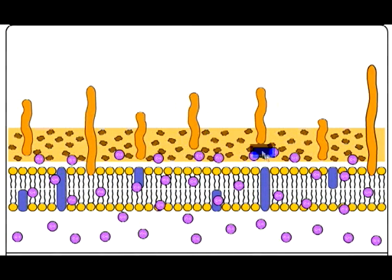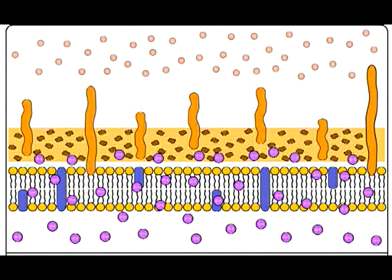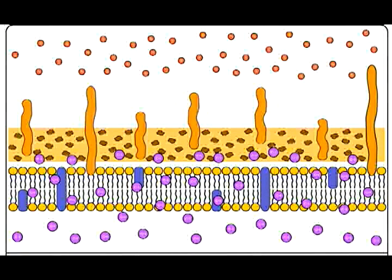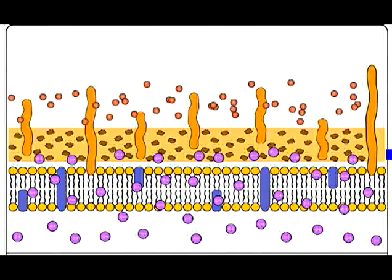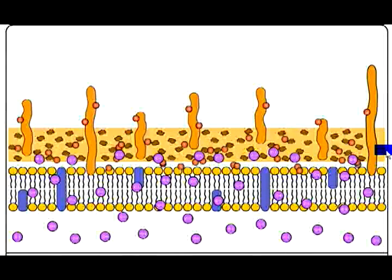Now let's see what happens when we add the counterstain safranin to a gram-positive cell. We'll remember that those crystal violet iodine particles were already trapped beneath. Here the safranin, you can see it's a small molecule, which has sort of a reddish or pinkish color. When we add it, it goes through that dehydrated peptidoglycan layer. It's still small enough that it can get through there.